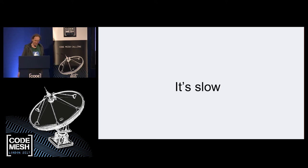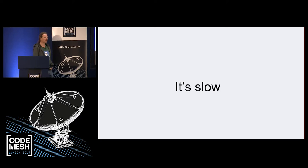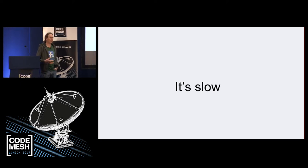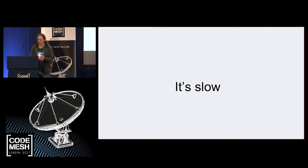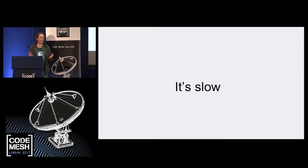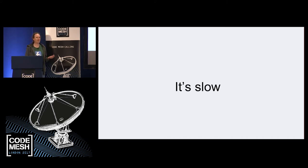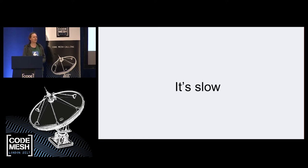First of all, it tends to be quite slow. Fetching data from a remote server is much slower than fetching data from local memory. There are lots of ways in which I/O tends to be slower than doing local things. And that means we don't want our programs to be waiting around for the I/O to finish, so we try and overlap the I/O as much as possible, or maybe batch it together. In some way we need concurrency to avoid our I/O taking too long.